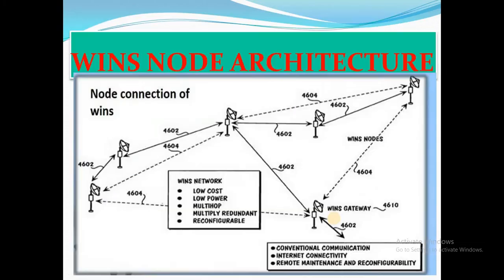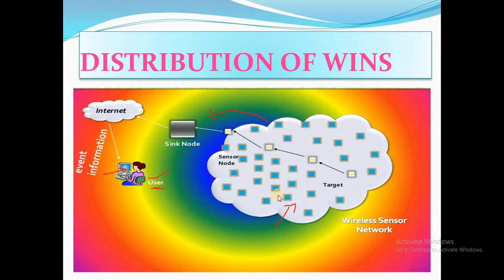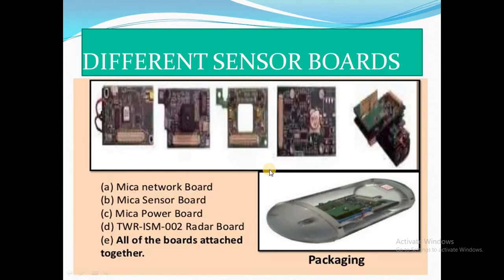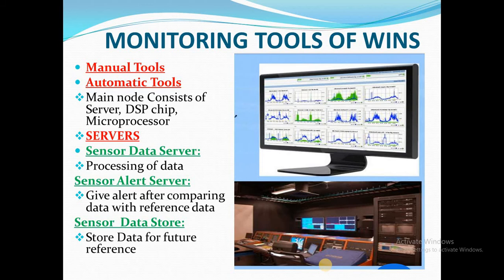The sensors are placed in the area for security purposes. The various sensor boards integrated include: the MICA sensor board, MICA micro network board, MICA power board, and the DWR radar board. All these boards are attached together to form one sensor — the Wireless Integrated Network Sensor.